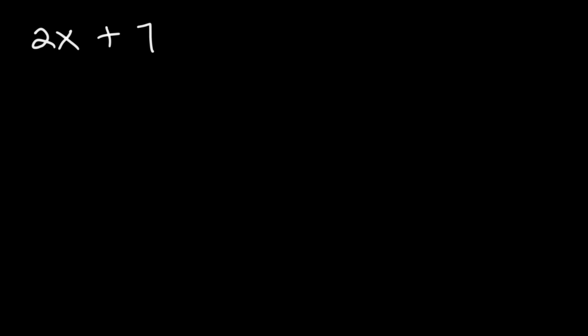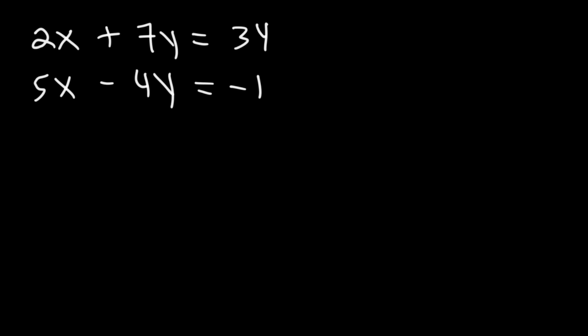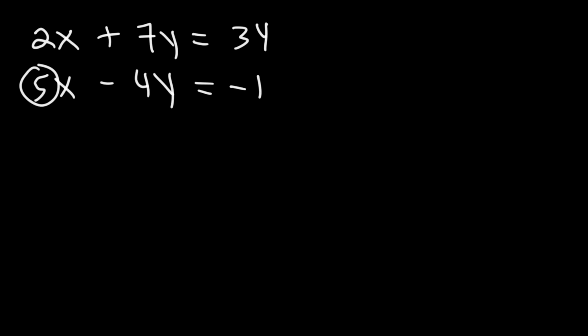Now let's move on to our third example, which is a little harder. If we wish to avoid fractions, which equation should we use and which variable should we isolate? Looking at the first equation, 2, 7, and 34 — 2 goes into 34 but not into 7. Looking at the second equation, 5, 4, and 1 are not multiples of each other either. So both equations will give some sort of fraction.